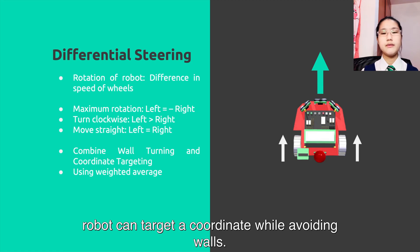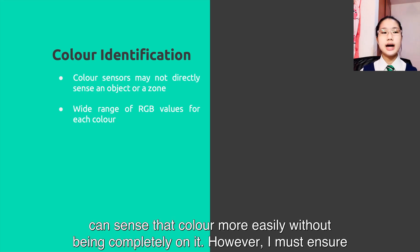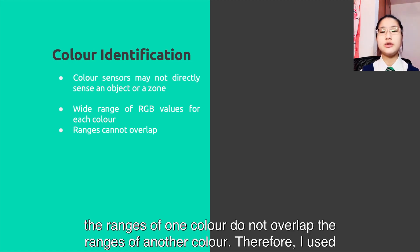Wall turning and coordinate targeting are combined with weighted average so the robot can target a coordinate while avoiding walls. Fourth, it is very likely for the color sensor to not directly sense an object on the zone. I need to allow for a wide range of RGB values for each color so that the robot can sense the color more easily without being completely on it.